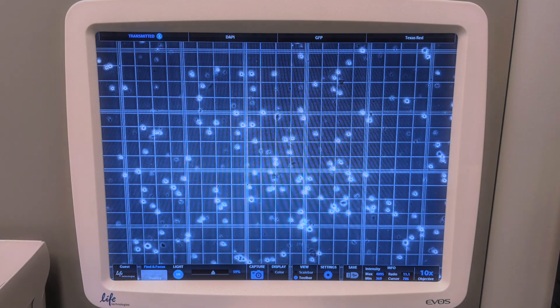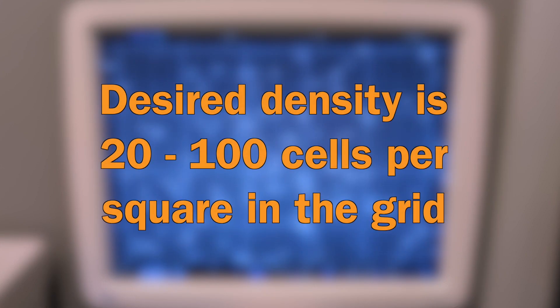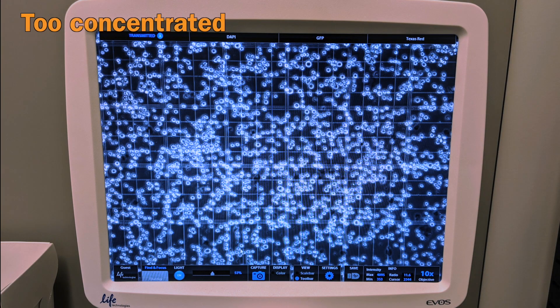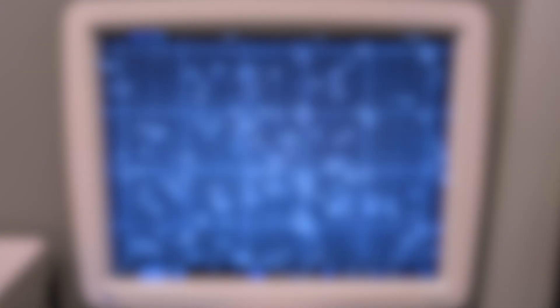For an accurate count, you'll want to have somewhere between about 20 to 100 cells per square in the grid so that the cells can be easily distinguished. If your suspension is too concentrated, you may dilute it and account for that later in your calculations. Repeat this counting procedure for the next square and several more squares if you wish.